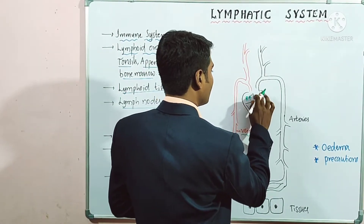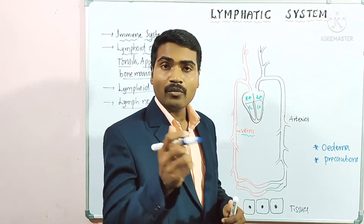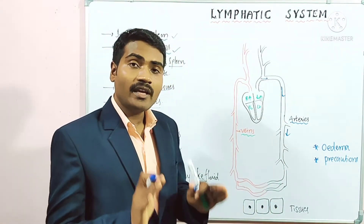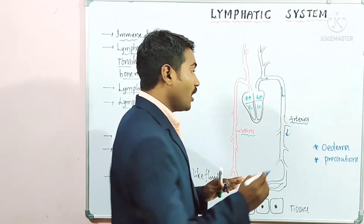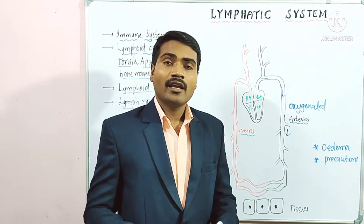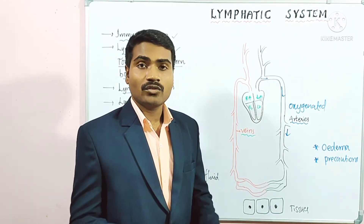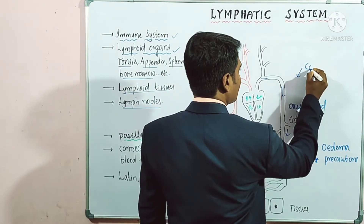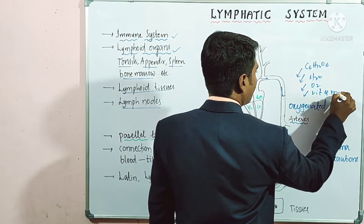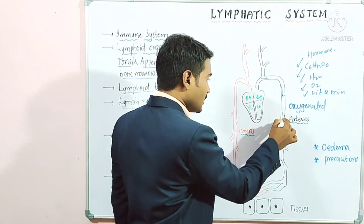The heart pumps oxygenated blood. The blood vessels carrying oxygenated blood are called arteries. This oxygenated blood carries many useful materials to the body cells — oxygen, glucose, amino acids, vitamins, minerals, and hormones. Different types of useful materials are carried by arteries to the body parts.